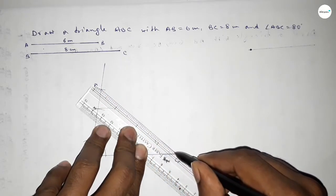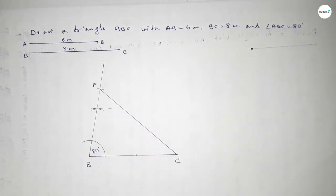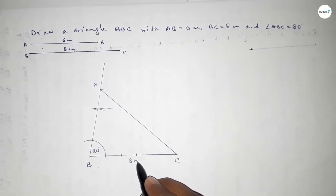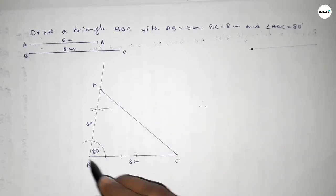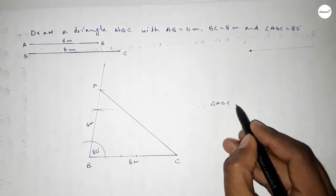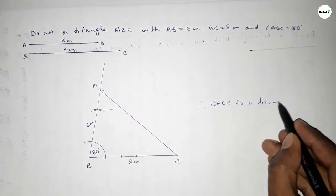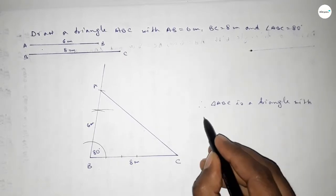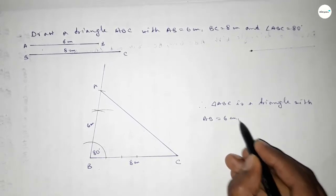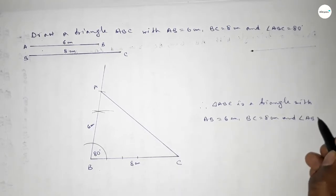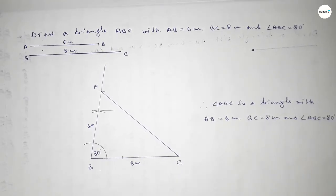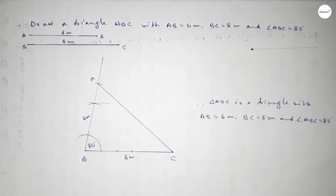Now joining A and C to get the triangle ABC. This side is 8 centimeter and this one is 6 centimeter. Therefore triangle ABC is a triangle with AB equal to 6 centimeter, BC equal to 8 centimeter, and angle ABC equal to 80 degrees. That's all, thanks for watching. If this video is helpful to you then please share it with your friends.